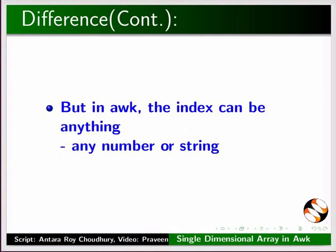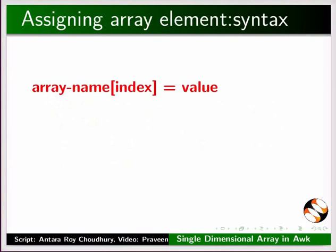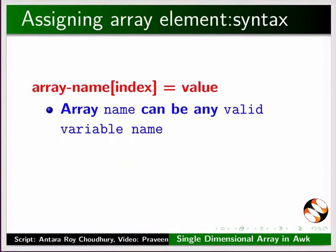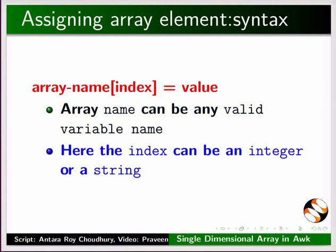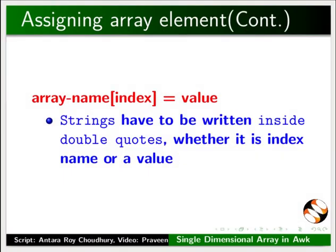But in awk, the index can be anything - any number or a string. This is the syntax of assigning an array element in awk. Array name can be any valid variable name. Here, the index can be an integer or a string. Strings have to be written inside double quotes, whether it is the index name or a value.